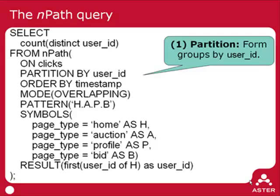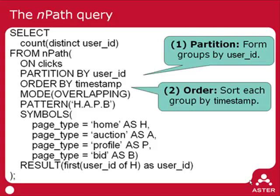Step one is to partition the data into groups. In this case, we'll be partitioning by user ID, because we'll only be considering clicks for a particular user. Within each partition, we're going to sort the clicks by a different column — in this case, by timestamp. So we form individual groups for every user, each sorted by timestamp, giving us an ordered sequence of clicks over which we'll be doing pattern matching.